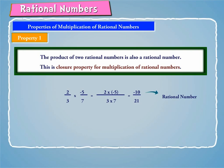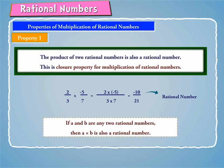Hence, the product of two rational numbers is also a rational number. This is the closure property for multiplication of rational numbers. Thus, if A and B are any two rational numbers, then A into B is also a rational number.